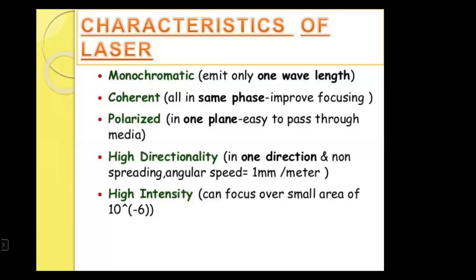After the definition, let us start the characteristics of laser. The first characteristic of laser is that it is monochromatic. Monochromatic means it emits only one wavelength. One wavelength means one color. Like in white light, it is a mixture of 7 colors. But monochromatic means that it has only one wavelength or one color.